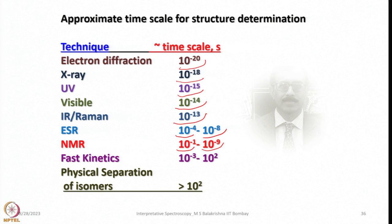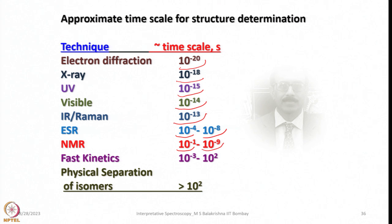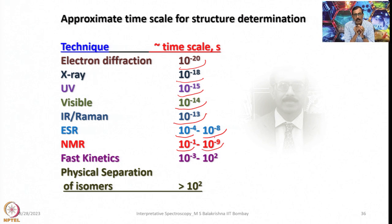That means basically whatever dynamic process is happening in the time scale of 10⁻¹ to 10⁻⁹ can be analyzed using NMR spectroscopy without any problem. But if there is any dynamic process that is much faster than 10⁻⁹ — let us say 10⁻¹⁰ — probably NMR would not identify it.